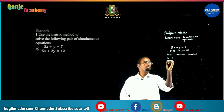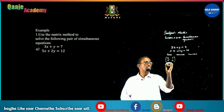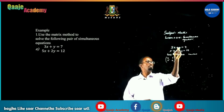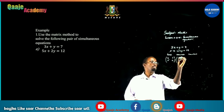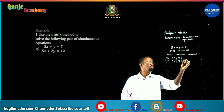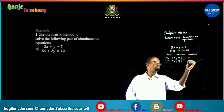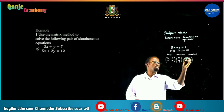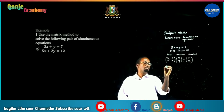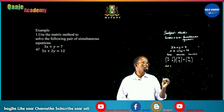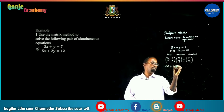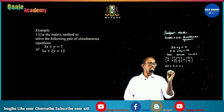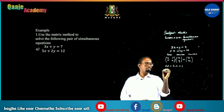The coefficients are [3, 1; 5, 2], the variables are [x; y], and the constants are [7; 12]. We find the determinant: 3 times 2 minus 1 times 5 equals 6 minus 5, which equals 1.